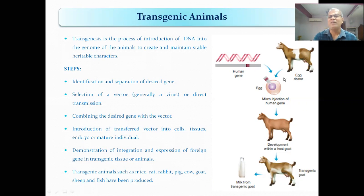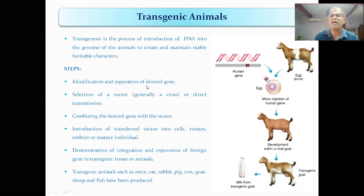The gene that you want to introduce is identified and isolated. This is the first step — identification and separation of the desired gene. The isolated gene is then prepared for direct transmission.